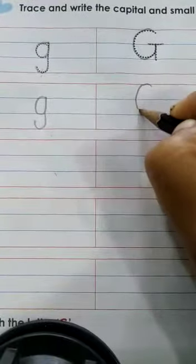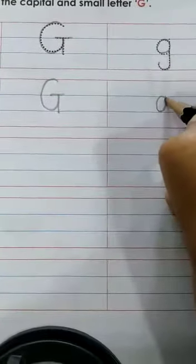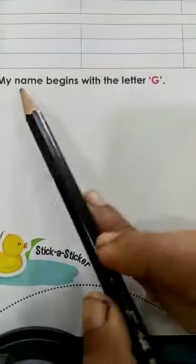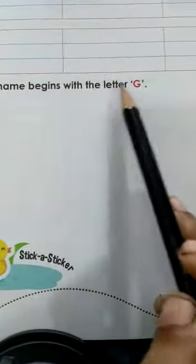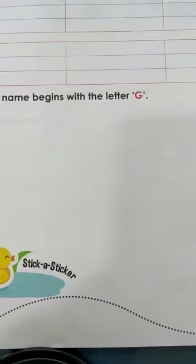Here you have capital G — finish it till the end. And here, capital G, you have to write yourself and finish all of this. Next, here is small letter g — you will write small g the same way and finish it. Here, my name begins with letter G, so you have to stick a sticker here.